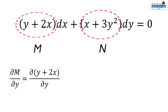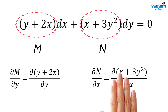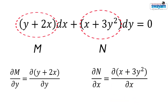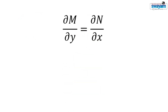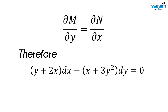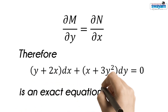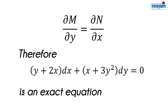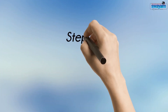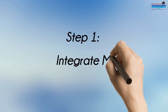The partial derivative of M with respect to y and the partial derivative of N with respect to x give the same result, equal to 1. Therefore, del M by del y is equal to del N by del x, and the given equation is an exact equation. In order to solve this exact equation, we follow the steps discussed earlier.